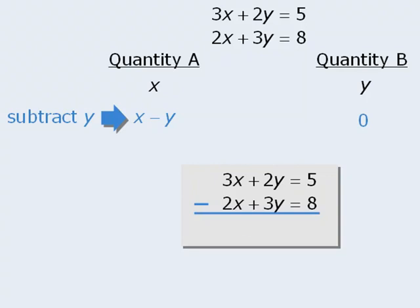First, 3x minus 2x equals x, 2y minus 3y equals negative or minus y, and 5 minus 8 equals negative 3.